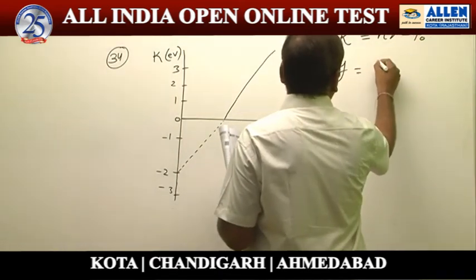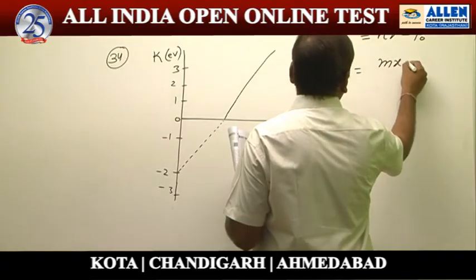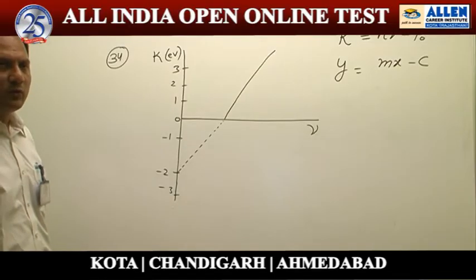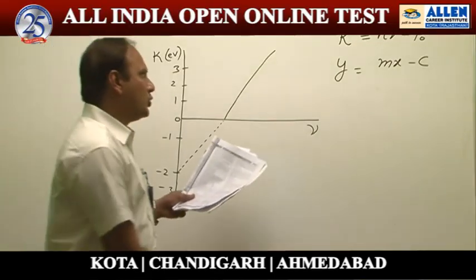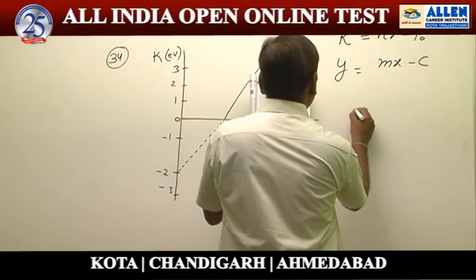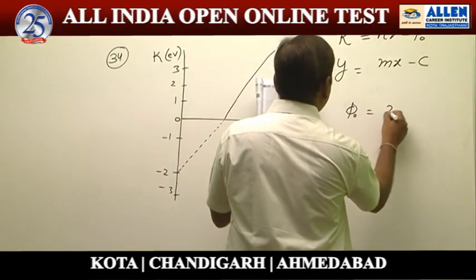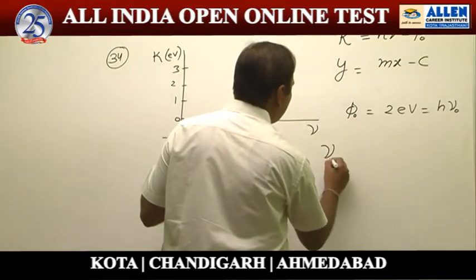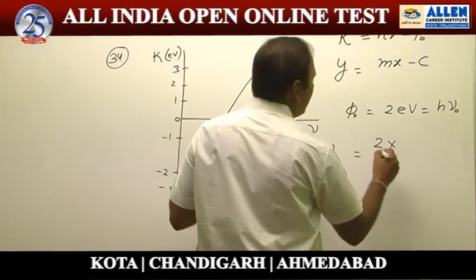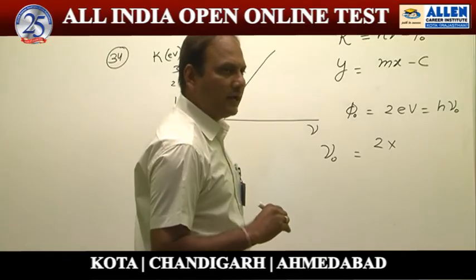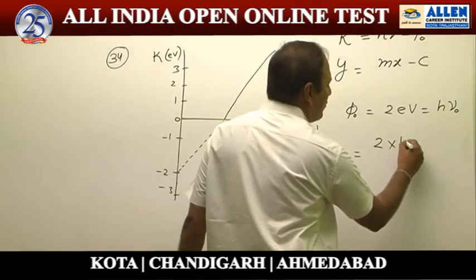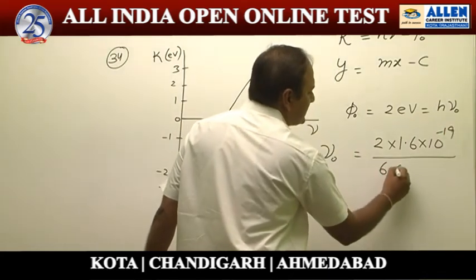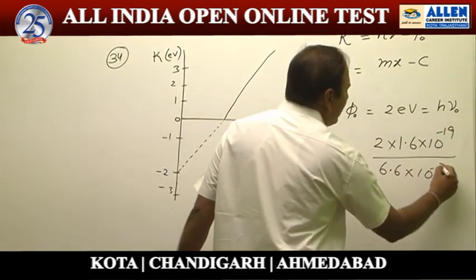Comparing with the equation of a straight line, the intercept on the negative y-axis equals the work function φ₀. Comparing it, we get φ₀ = 2 electron volts = hν₀. We convert electron volts to joules by multiplying by 1.6×10⁻¹⁹. The value of Planck's constant is 6.6×10⁻³⁴.